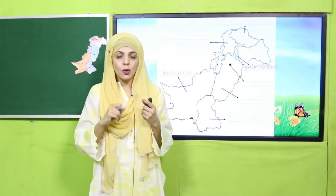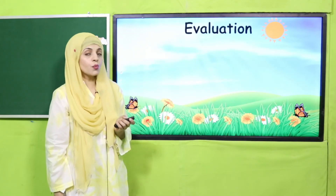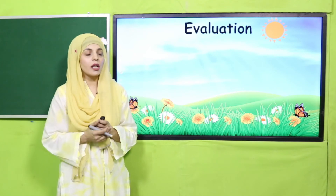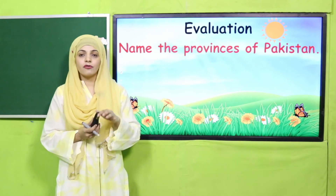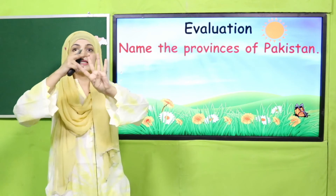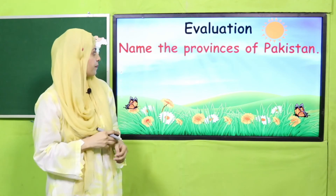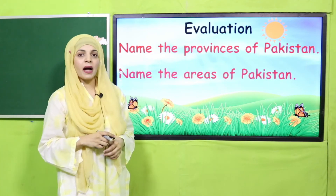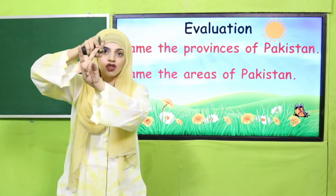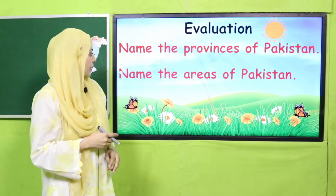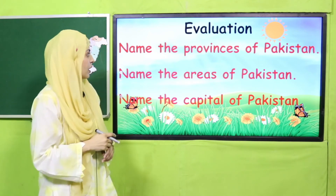Now for your evaluation, you have to answer a few questions. Name the provinces of Pakistan — we have four: Punjab, Sindh, Khyber Pakhtunkhwa, and Balochistan. Name the areas of Pakistan — there are two: Gilgit Baltistan and Azad Jammu and Kashmir. Name the capital of Pakistan — that is Islamabad. Very good!